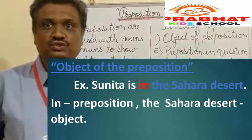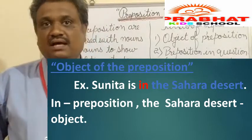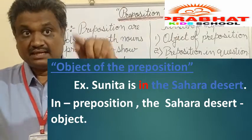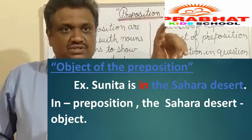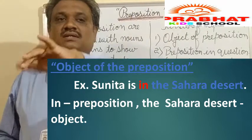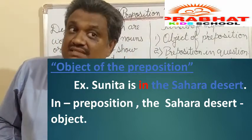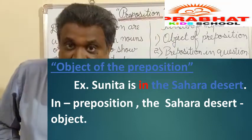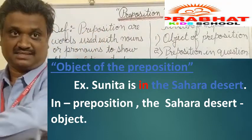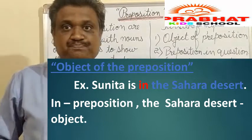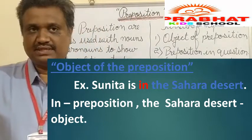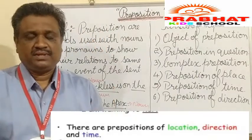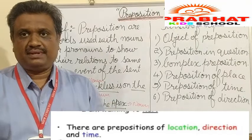Let's see an example: 'Sunita is in the Sahara Desert.' Where is Sunita? In the Sahara Desert. Here, 'in' is the preposition. After the preposition, 'the Sahara Desert' comes — and that is the object of the preposition. So the preposition is 'in' and the object is 'Sahara Desert.'